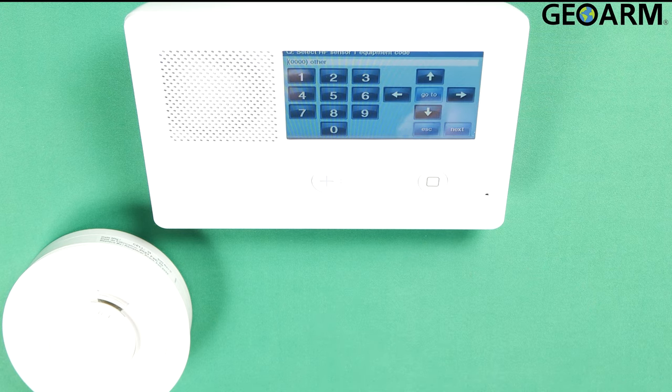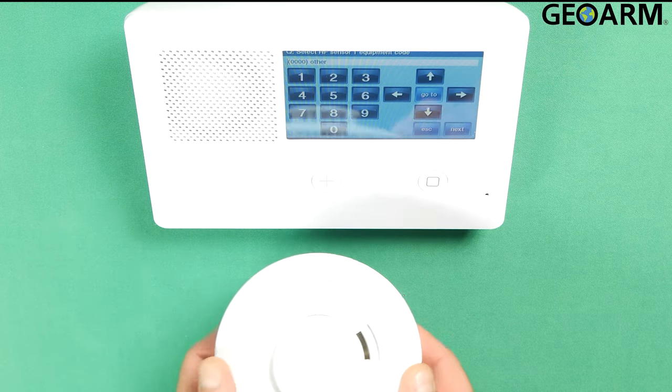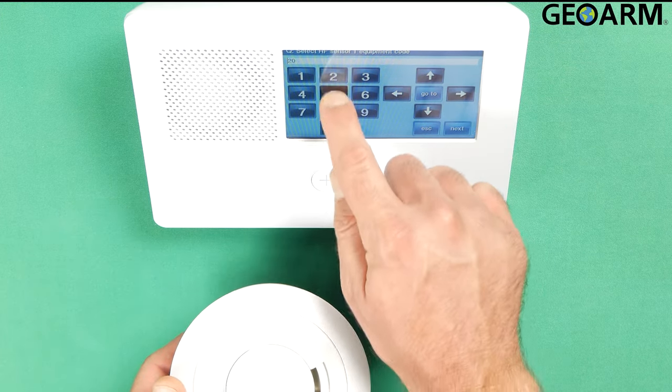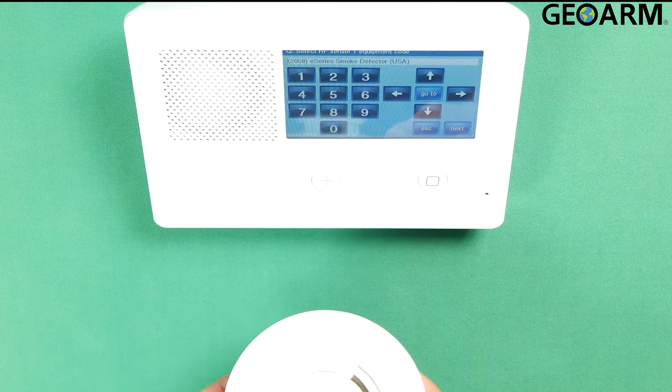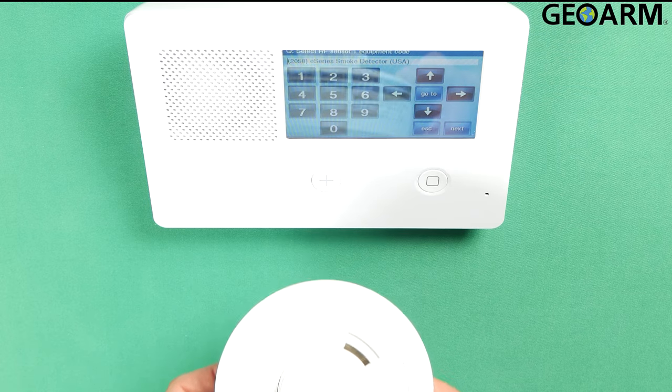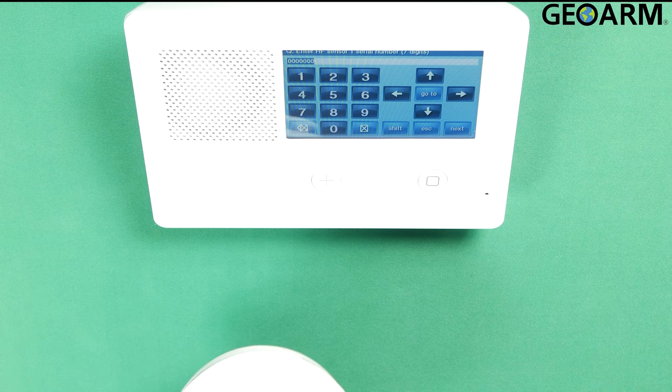It's going to ask for the equipment code. Now the equipment code for the US version smoke, heat and freeze detector will be 2058. Once again that is 2058 for the E-Series equipment code for the US version of the smoke, heat and freeze detector. Once you have that equipment code, press the down arrow.